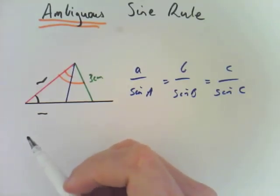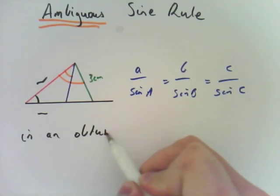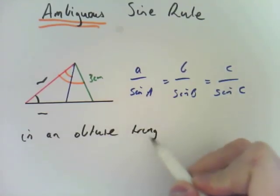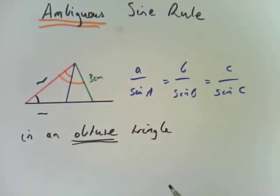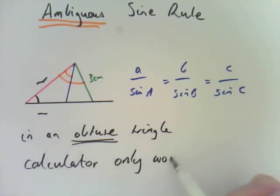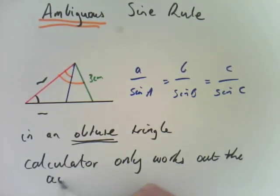So most of the time in the question they will say in an obtuse triangle. So they'll use the word there obtuse triangle and your calculator, the calculator only works out the acute angle.